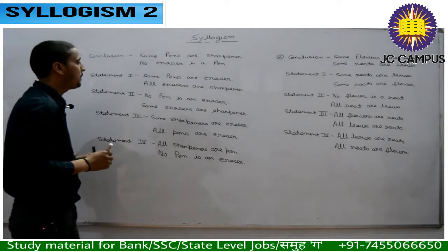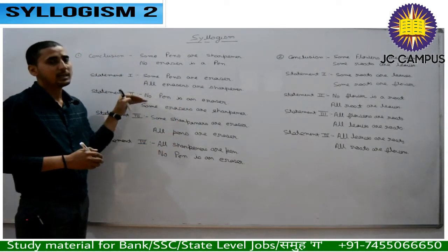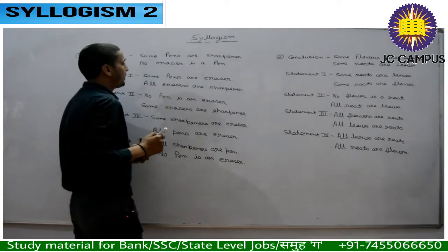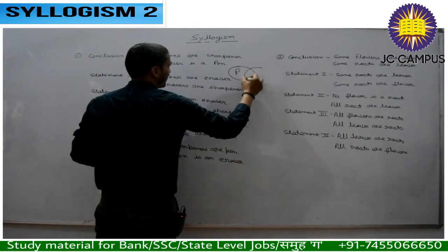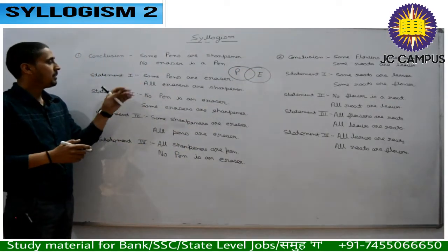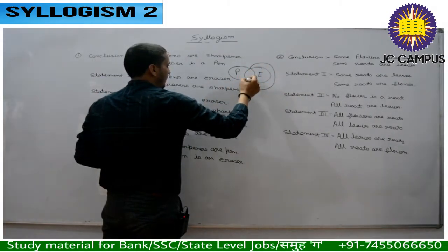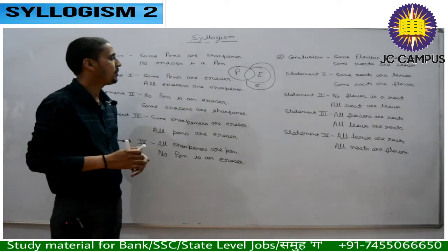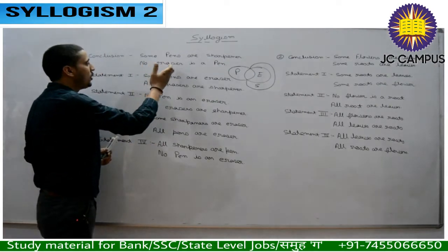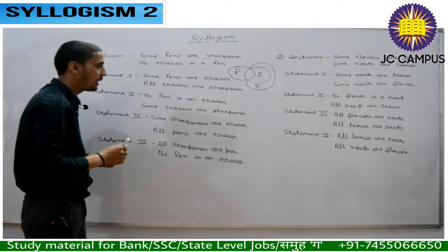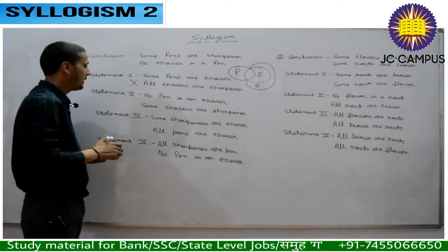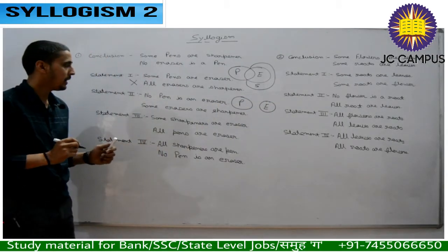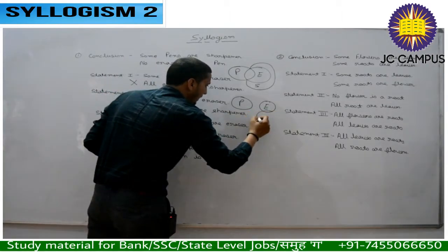This type has 4 statements. Let's check which statement matches the conclusion. First, we have 'some pens are erasers.' In the first video I told you how to draw the Venn diagram. Second, 'all erasers are sharpeners.' We draw this Venn diagram and check: 'some pens are sharpeners' — right. But 'no eraser is a pen' — wrong. That means the first statement is wrong.